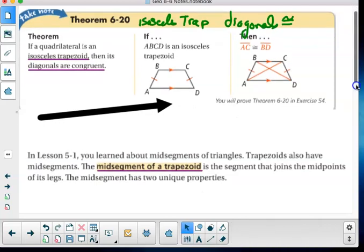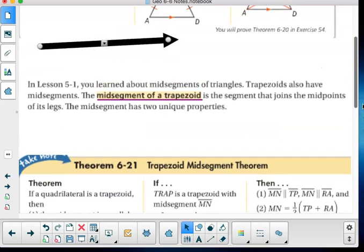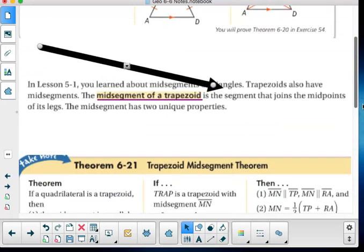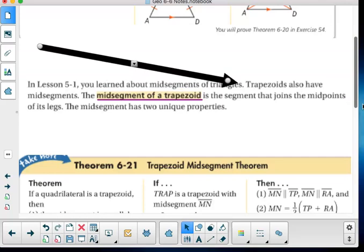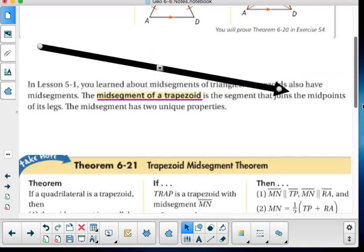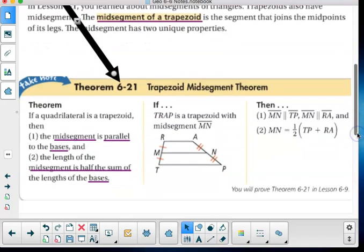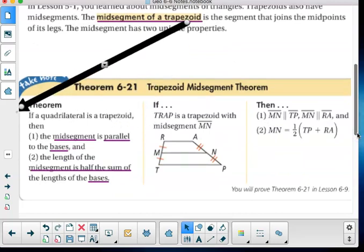So now in lesson 5.1, you learned about the mid-segments of triangles. Trapezoids also have a mid-segment. The mid-segment of a trapezoid is the segment that joins the midpoints of its legs. The mid-segment has two unique properties. Let's look at those unique properties.